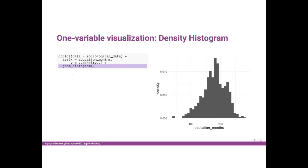We follow the same strategy: start by plotting the basic graph and then enhance it. To create a basic density histogram, I use ggplot() with the data as sociological_data. I set aes(x = education_month, y = ..density..) and then call geom_histogram() to make the histogram. Here I have my first basic histogram.